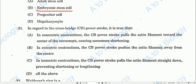Question number thirty-one: Regarding the cross-bridge power stroke — in concentric contraction, the cross-bridge power stroke pulls the actin filament towards the center of the sarcomere, causing sarcomere shortening. Option A will be the correct one.